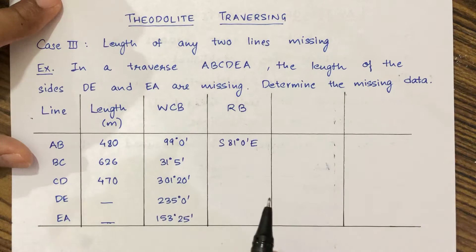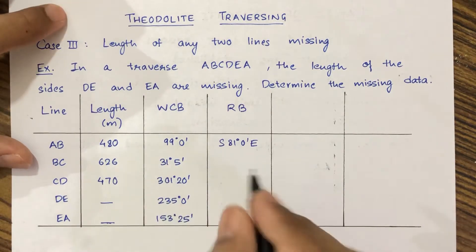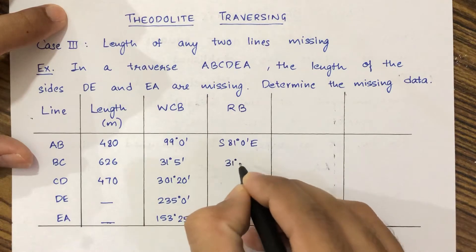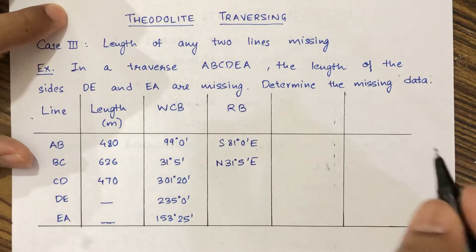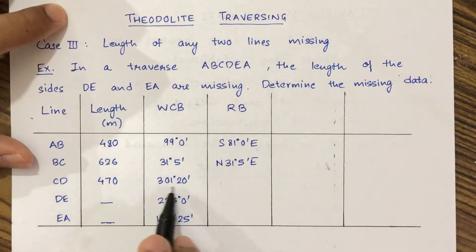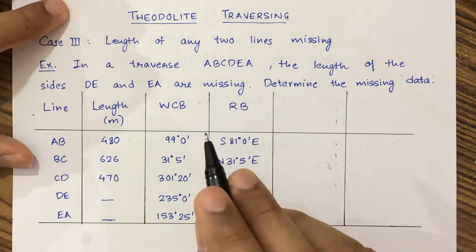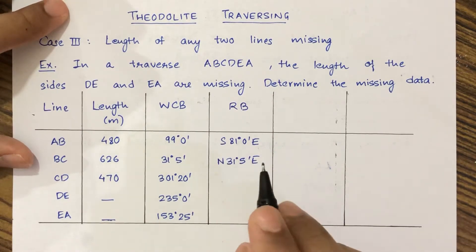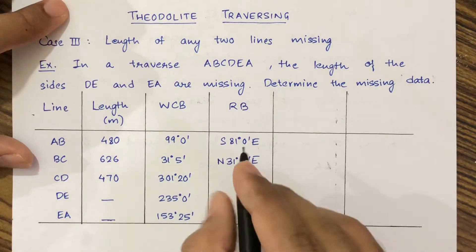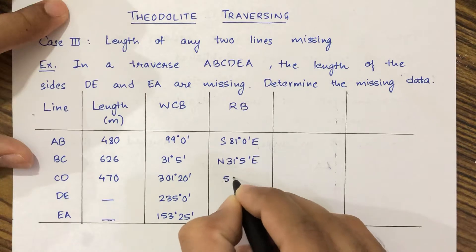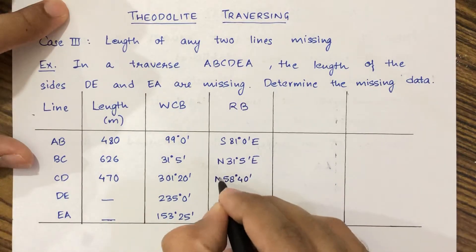Then there is 31 degrees 5 minutes, which is in the first quadrant. So the value remains as it is — 31 degrees 5 minutes — and the direction will be north east. Next is 301 degrees 20 minutes, which is in the fourth quadrant, that is north west. Subtracting from 360 degrees gives us the reduced bearing of 58 degrees 40 minutes north west.